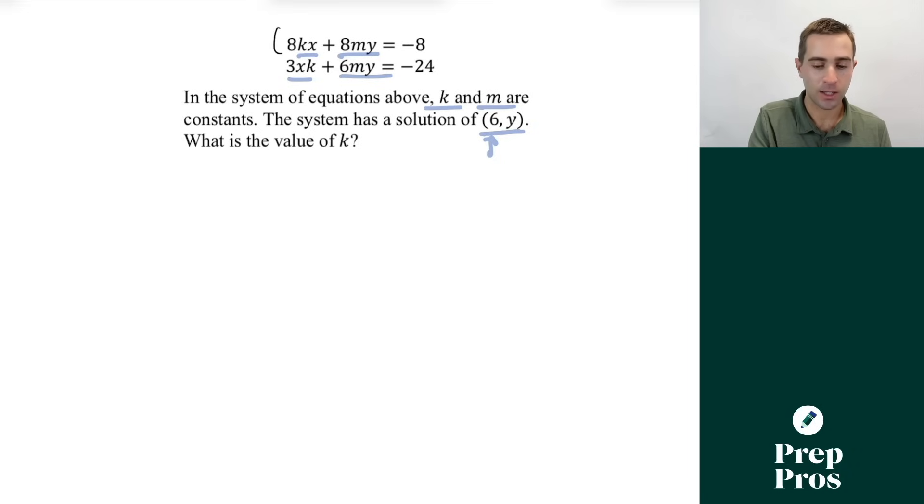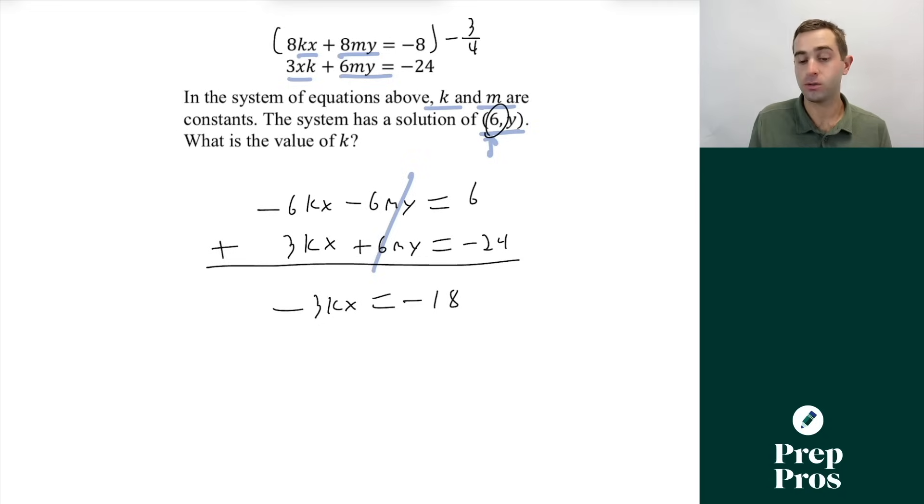The easiest way we can do this is we can take our whole top expression and we can multiply it by negative three quarters. As we do that, that's going to leave us with negative 6kx minus 6my equals positive 6. Then our bottom expression is going to stay the same: 3kx plus 6my is equal to negative 24. Now we can add these two expressions together, we can cancel out those my's, and now we're left with negative 3kx is equal to negative 18. Now we know we have a solution at 6 as our x value, so we can plug that in for x. That's going to give us negative 18k is equal to negative 18, and that will give us that k is equal to 1.